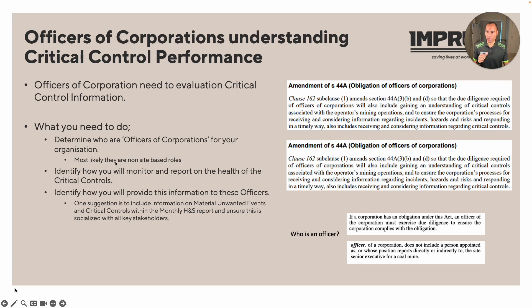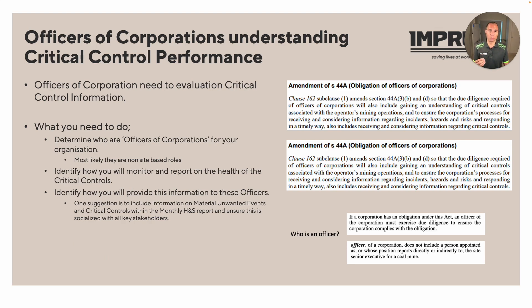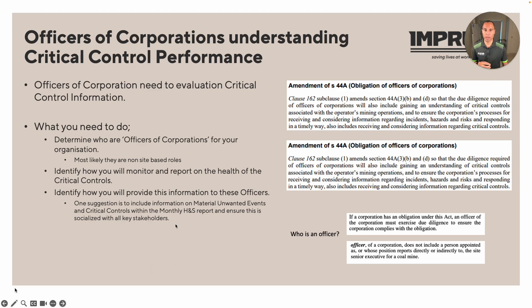Identify who the officers are, identify how you're going to monitor and report on the health of critical controls — that's a whole piece in and of itself — and then work out how you will get this information to these officers. A simple starting point could be: if you already do a monthly health and safety report, add critical control information to it and ensure that report is circulated to these officers and that you can demonstrate that.